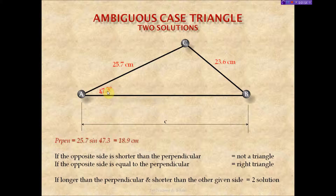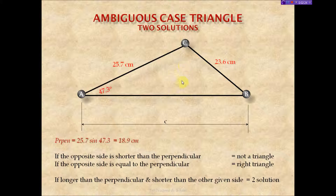The information we're given is this angle, the side opposite, and another given side. When we look at this, the side opposite the angle is shorter than the other given side, so we have a possibility of an ambiguous case. But we need to run some checks. If this side happens to be shorter than the perpendicular, then we don't have a closed figure and it won't be a triangle.